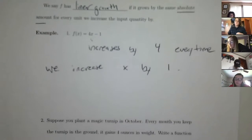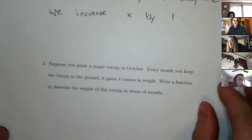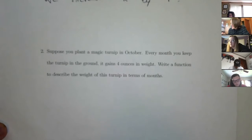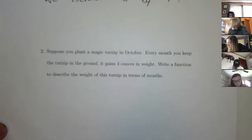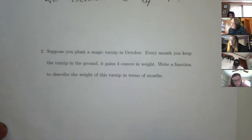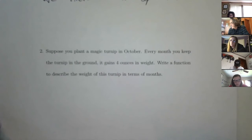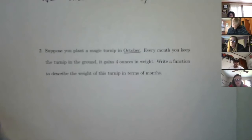The second thing here is a word problem — kind of fun. Suppose you plant a magic turnip in October. Every month you keep it in the ground, it gains 4 ounces in weight. Write a function to describe the weight of this turnip in terms of months. I also don't know the growing season for turnips; I don't think it's October.